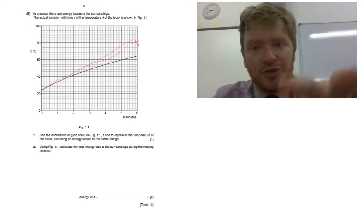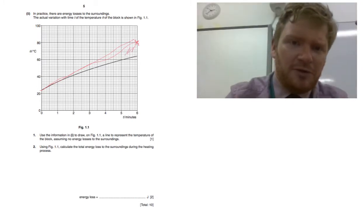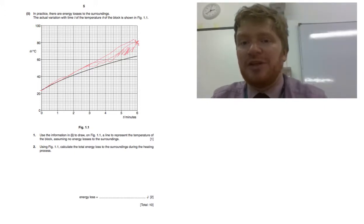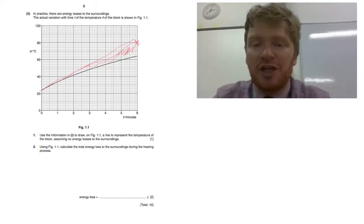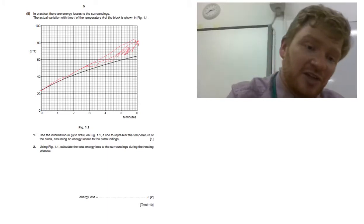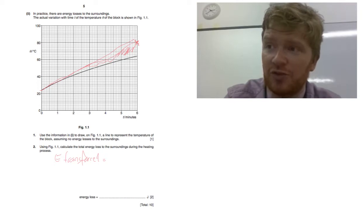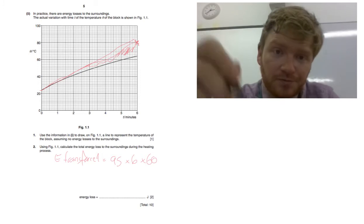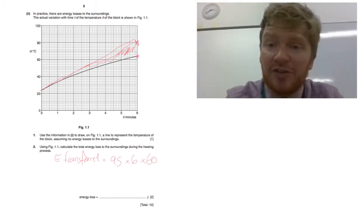And it says calculate total energy loss. Now, don't be tempted to go doing some weird like, I've got to try and find this area or something. No, no, no. It's much simpler than that. We can just say, well, what is the energy that's actually being transferred? And then what's the actual energy that I've transferred? The actual energy I've transferred is the power times time because it's electric energy. So I can say E transferred is power times time, which is 95 times 6 times 60.